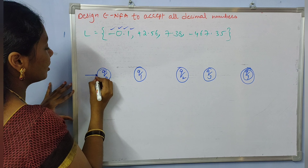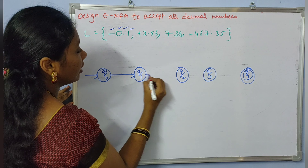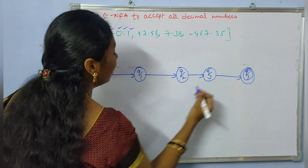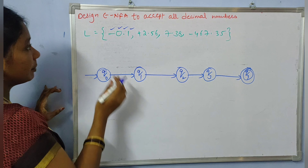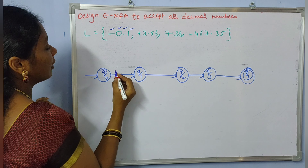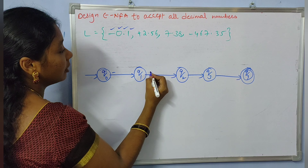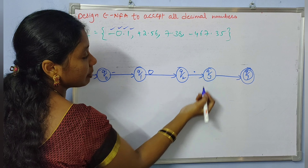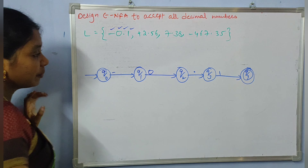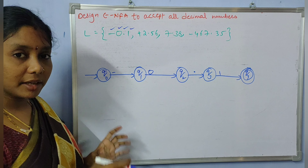Let us draw five states: q0, q1, q2, q3, and q4. Make the last state the final state and q0 the initial state. First we need to construct the NFA to accept the minimal string minus 0.1 — so I write minus here, 0 here, decimal point here, and 1 here. This is the NFA to accept the minimal string.